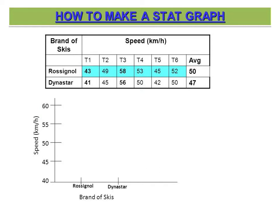All you're going to do is put a dot or a data point for every trial. So you'd put one for 43, one for 49, 58, 53, 45, 52. I'll cross them off as I go. Those could be in a better straight line than mine — mine are a little crooked. Don't put a dot for an average yet.